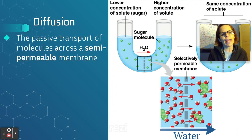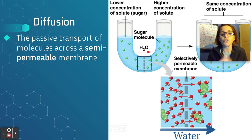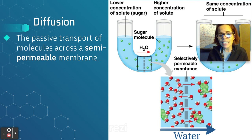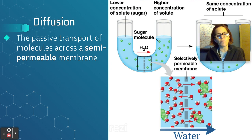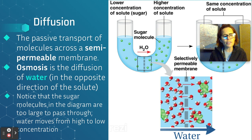Diffusion is the passive transport of molecules across a semi-permeable membrane. Take a look at the diagram: we've got water on the left, water on the right, and a semi-permeable membrane in the middle. Sugar molecules shown in green are too large to pass across the membrane. If on the left it's 10% sugar and 90% water, and on the right it's 20% sugar and 80% water, water is going to travel from an area of high concentration to an area of low concentration. That's called osmosis — always moving from high to low.